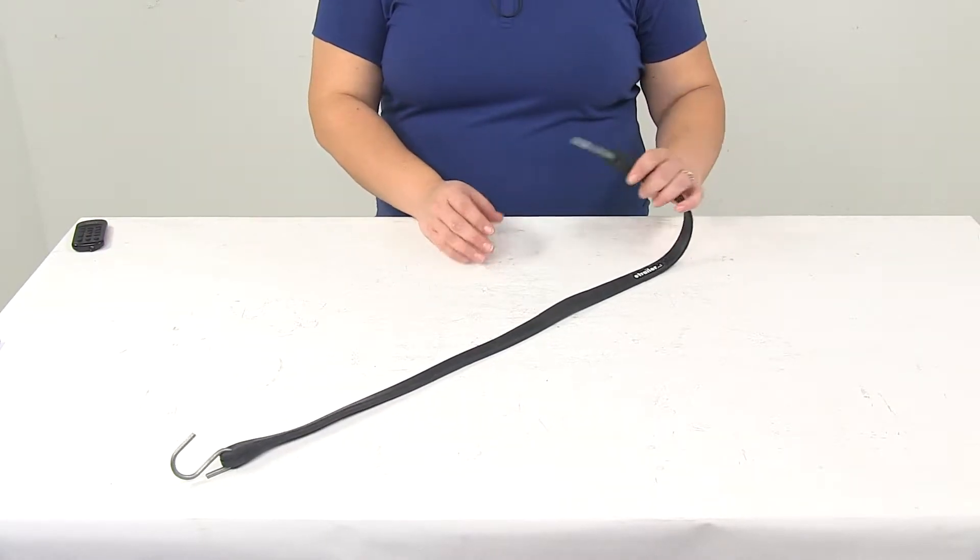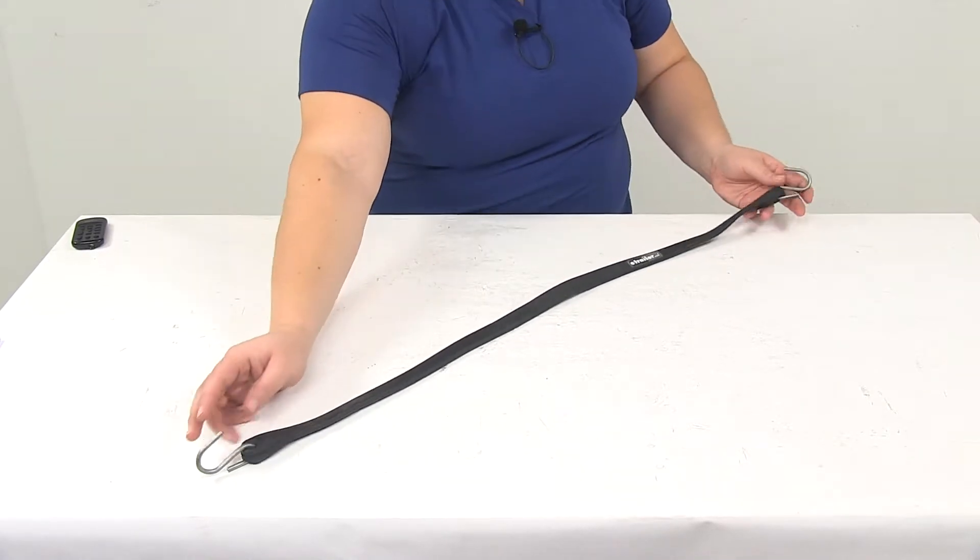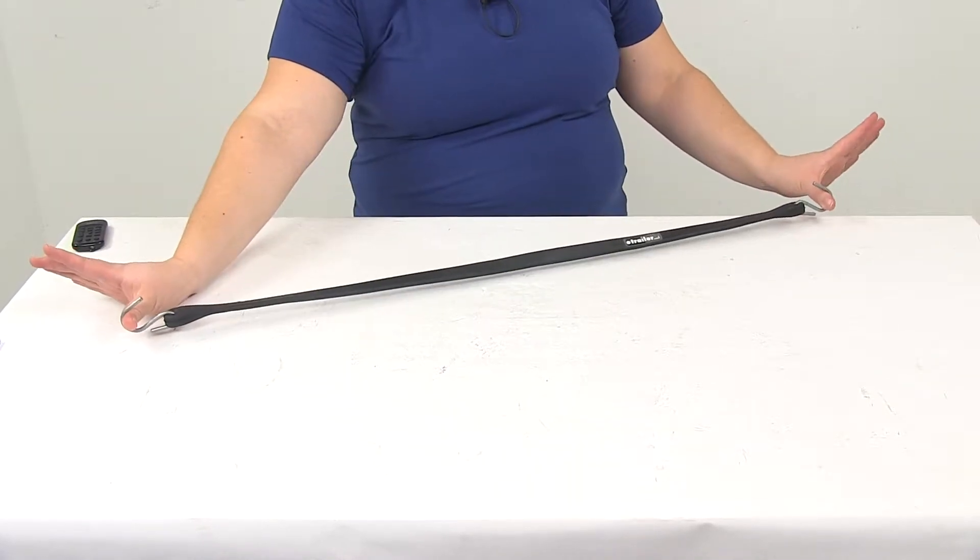Today we're going to take a look at the Titan Chain Tarp Tie-Down Strap with S-Hooks. This is made of a sturdy rubber construction that's going to be 31 inches long.